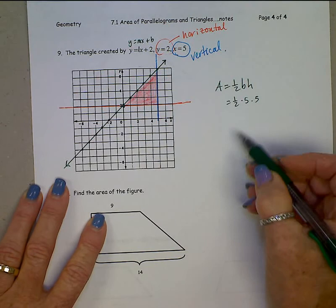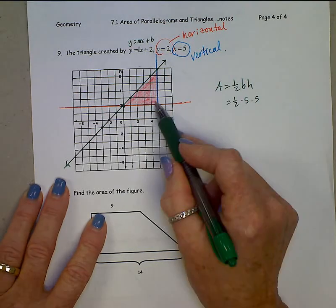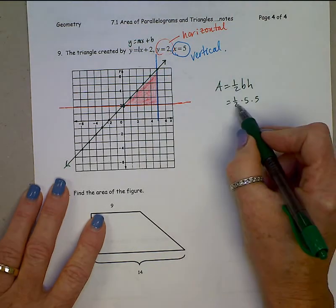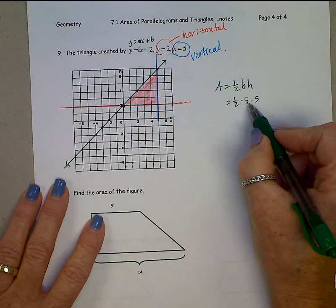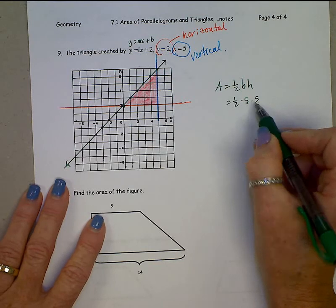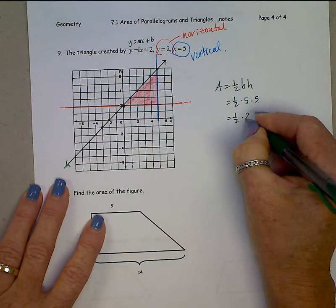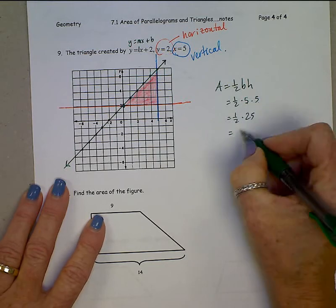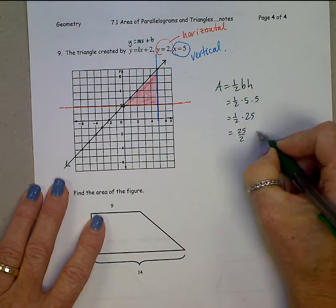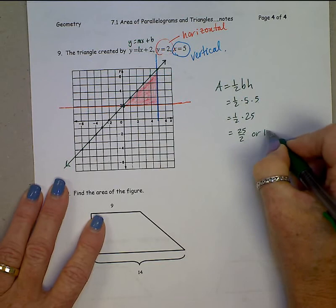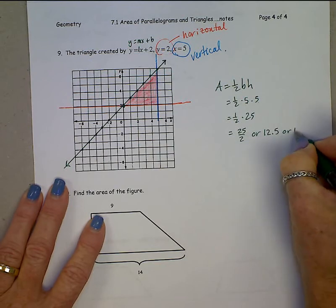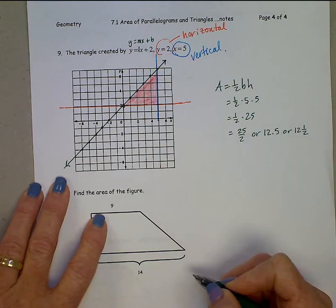Alright, rather than do half of 5 and then take that times 5, let's do 5 times 5 first, which is 25. And then half of 25, you can write that as 25 over 2, or 12.5. Either one of those is acceptable.